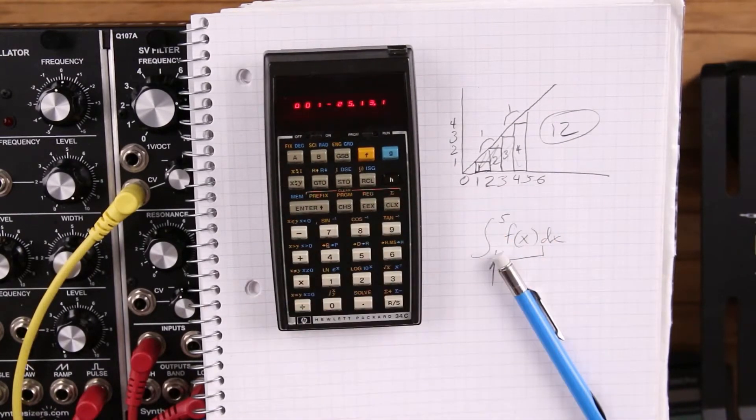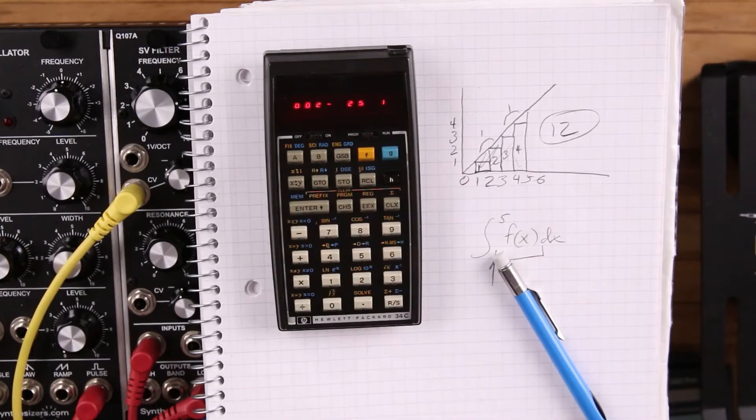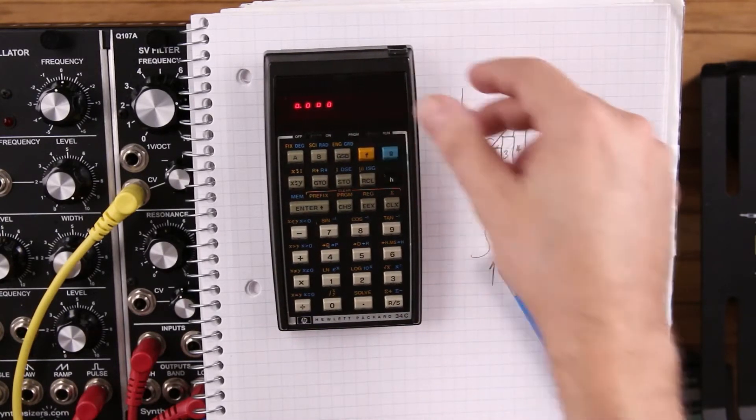And we're going to start with a label. Let's make it A. And the only thing this program is going to do is return the X value. So all we have to do is put a return in there. So that's our program. Now we'll go back to run.